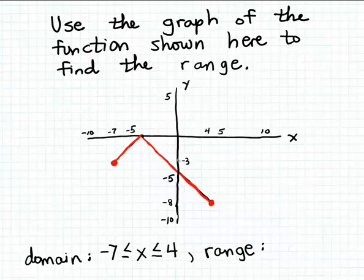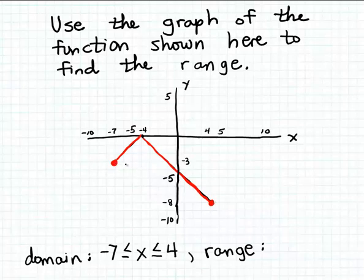But that's not correct, because the output values for this function actually extend further up the y-axis. Minus 2, for instance, is an output value; minus 1 is an output value. In fact, the output values extend all the way up to 0 on the y-axis, and it appears the maximum output from this function is 0. That corresponds to an input of approximately minus 4 on the x-axis. So the range is actually a bit larger than what it would appear if you just focus on the left and right endpoints of the graph.